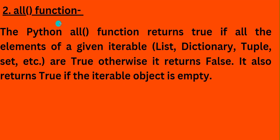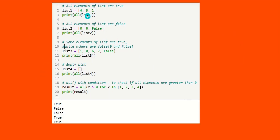Next, the 'all' function. It returns true if all the elements of a list, dictionary, or tuple are true. It also returns false when applicable. Note it returns true even for an empty object. For example, a list with 4, 5, and 1 — these are not false values, there is no zero, so all elements are true and the output is true.